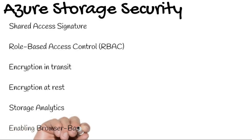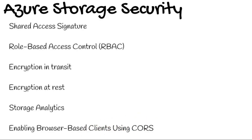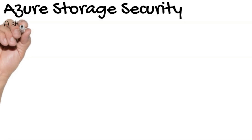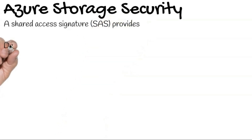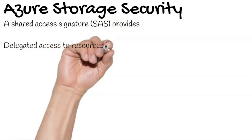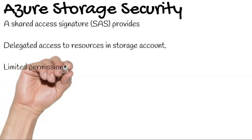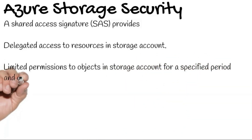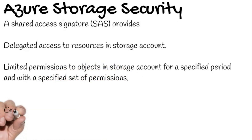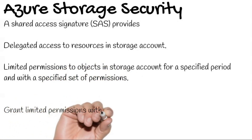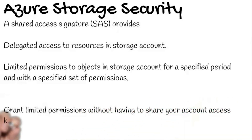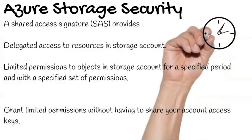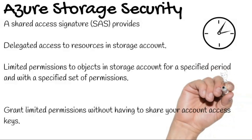A Shared Access Signature grants limited permissions without having to share your account access keys. It provides delegated access to resources in a storage account, with limited permissions to objects for a specified period and a specified set of permissions. If you don't want to share your Azure storage account key with someone, create a SAS, assign limited access to it, and then share the SAS key with that person.